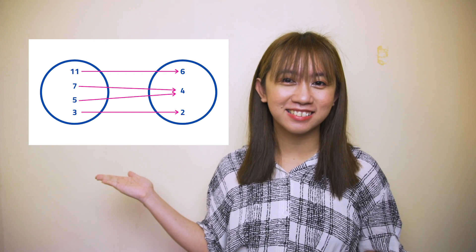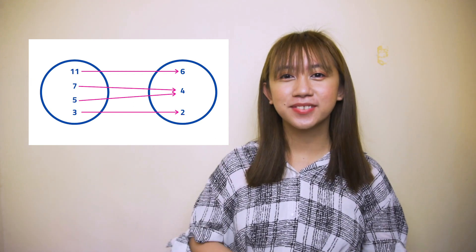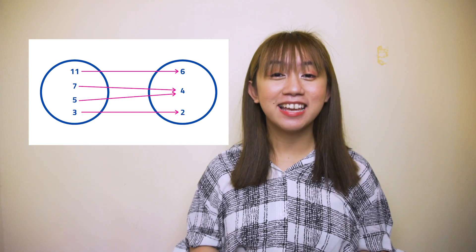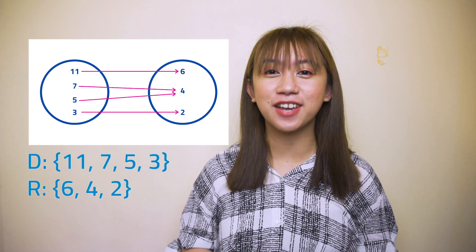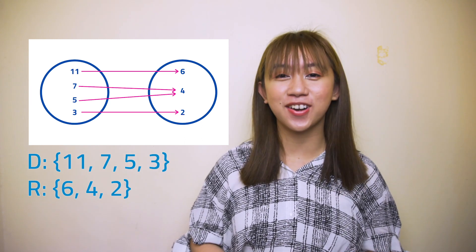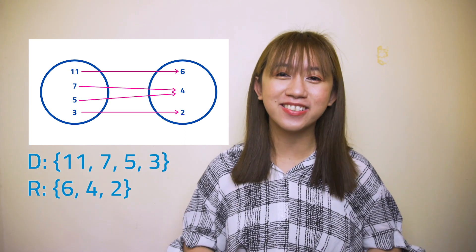Now, take a look at these relations I will show you and give me the domain and range of each relation. Are you ready? Let's go! What is the domain and range of this relation? Good job! The set of domains are 11, 7, 5, and 3. Meanwhile, the set of range are 6, 4, and 2.